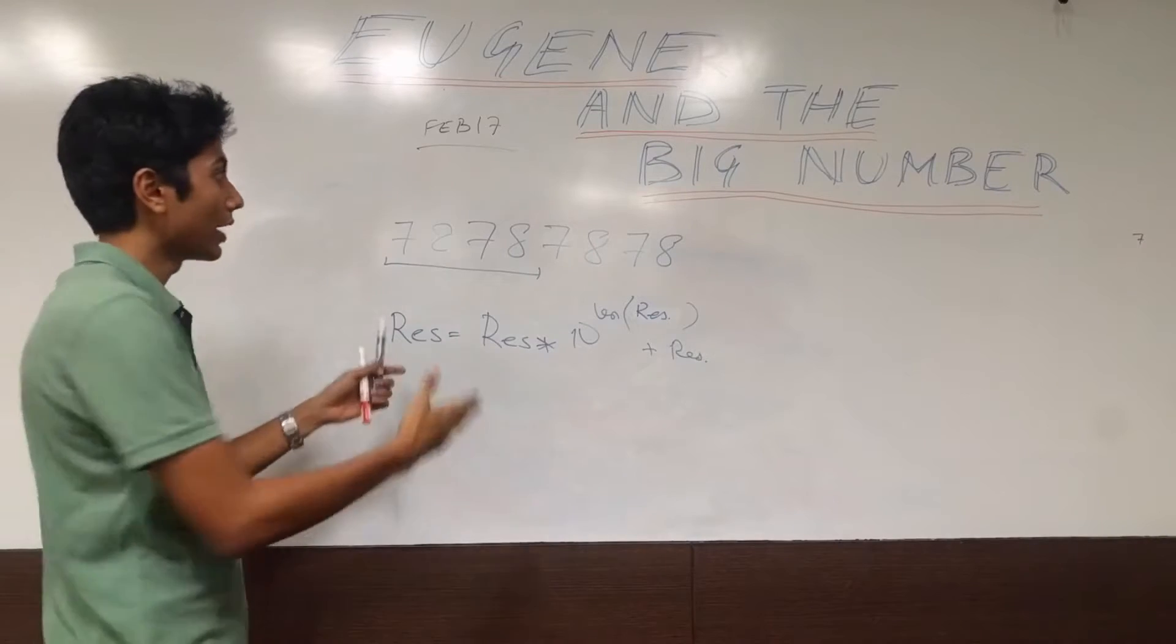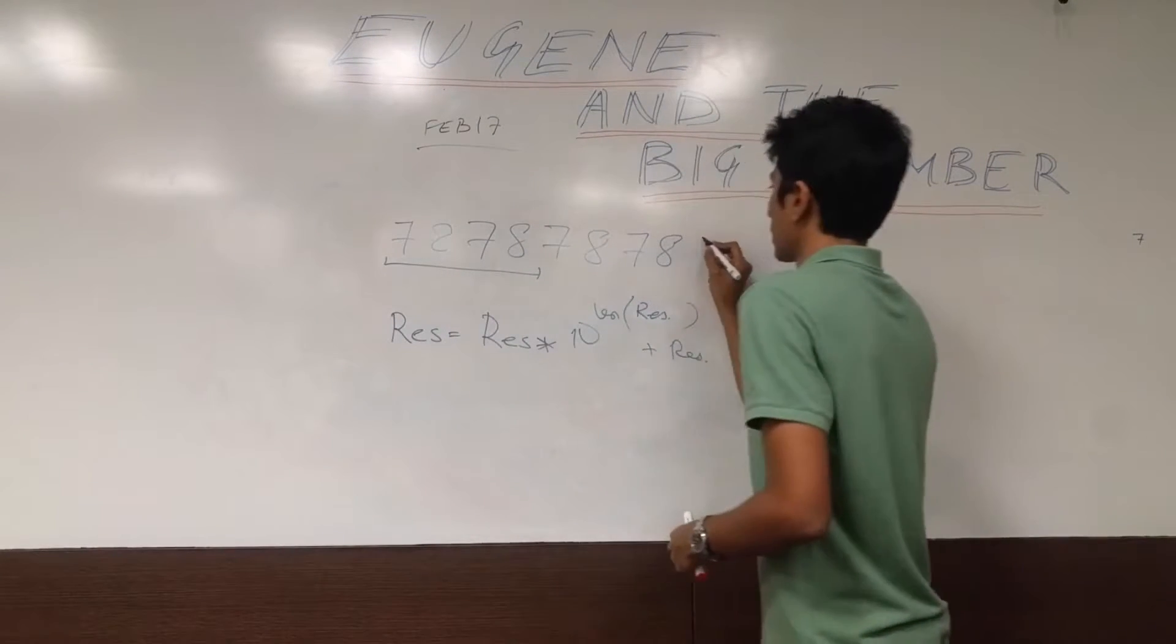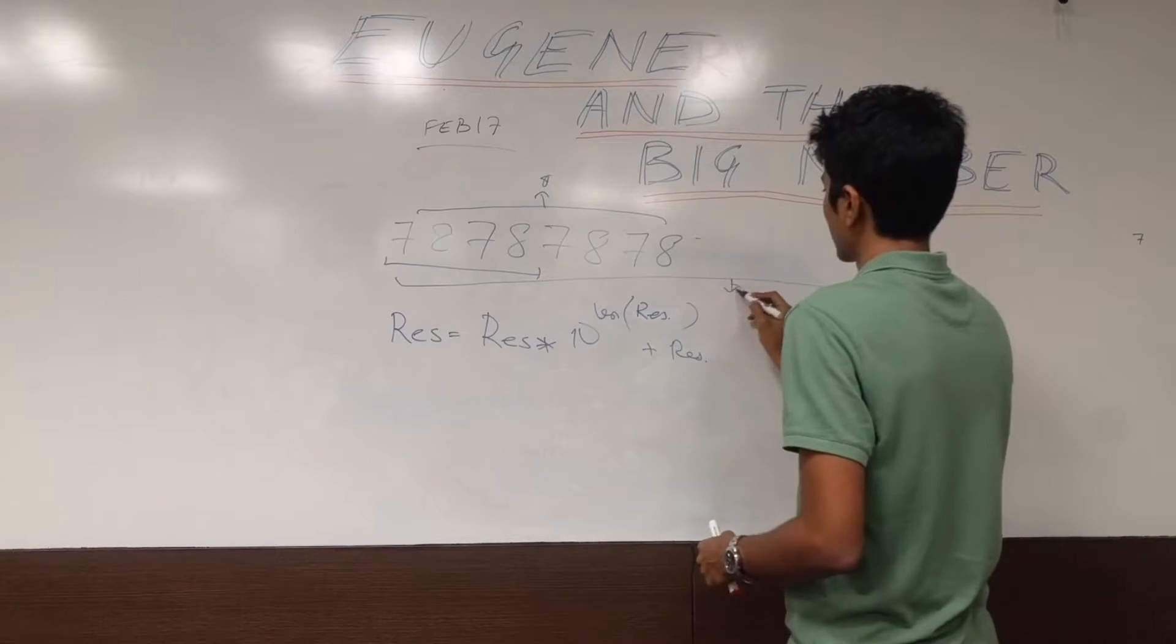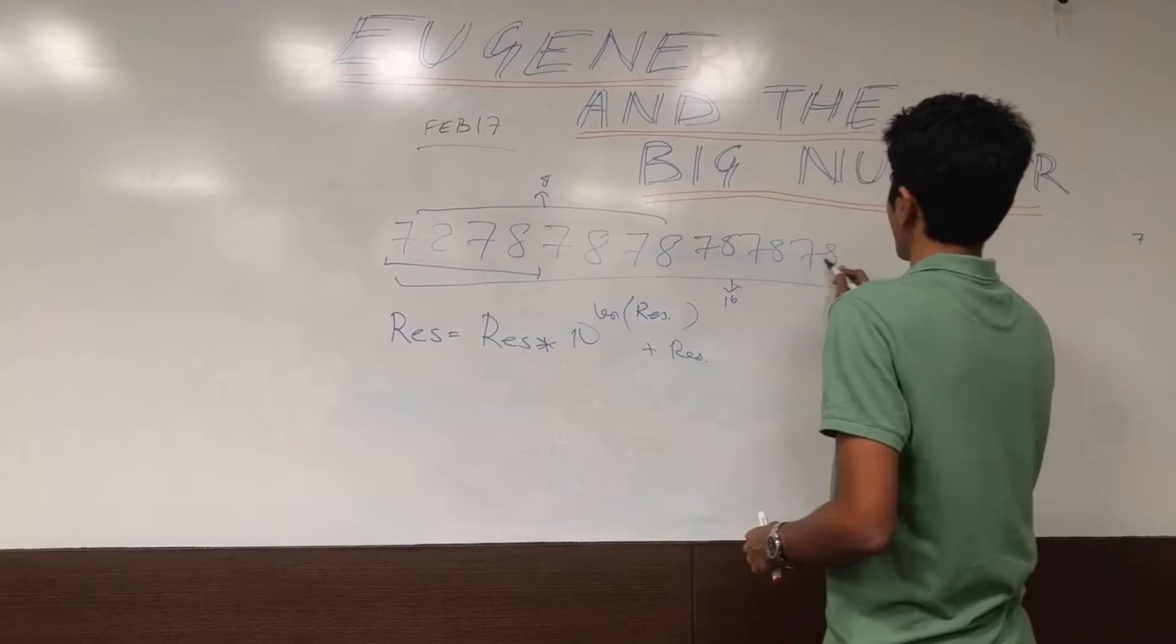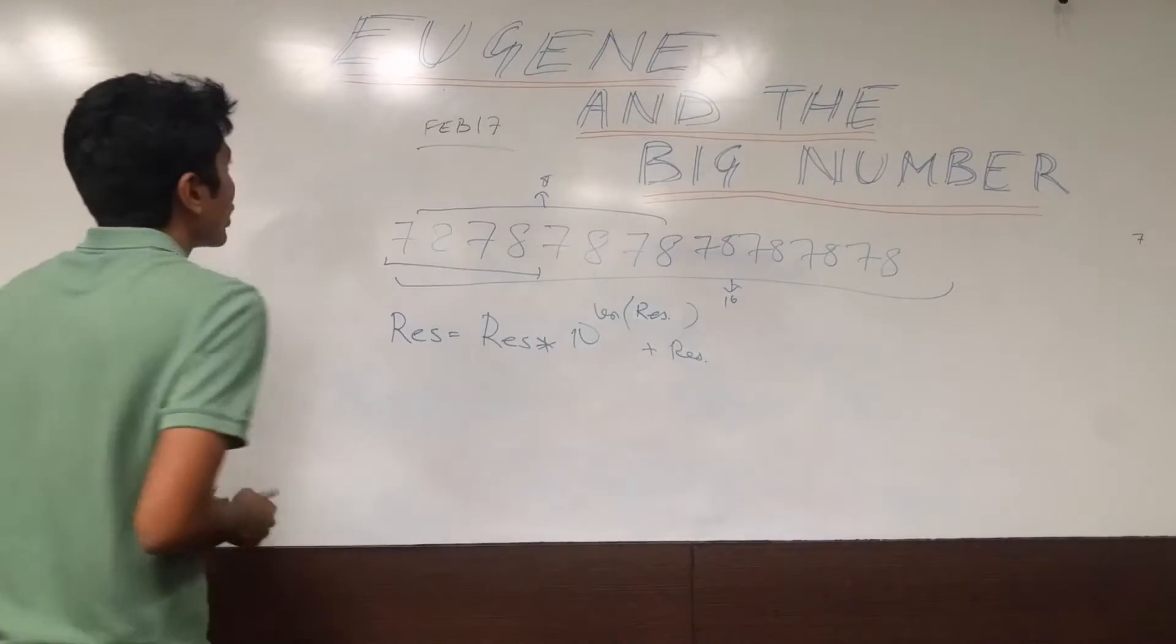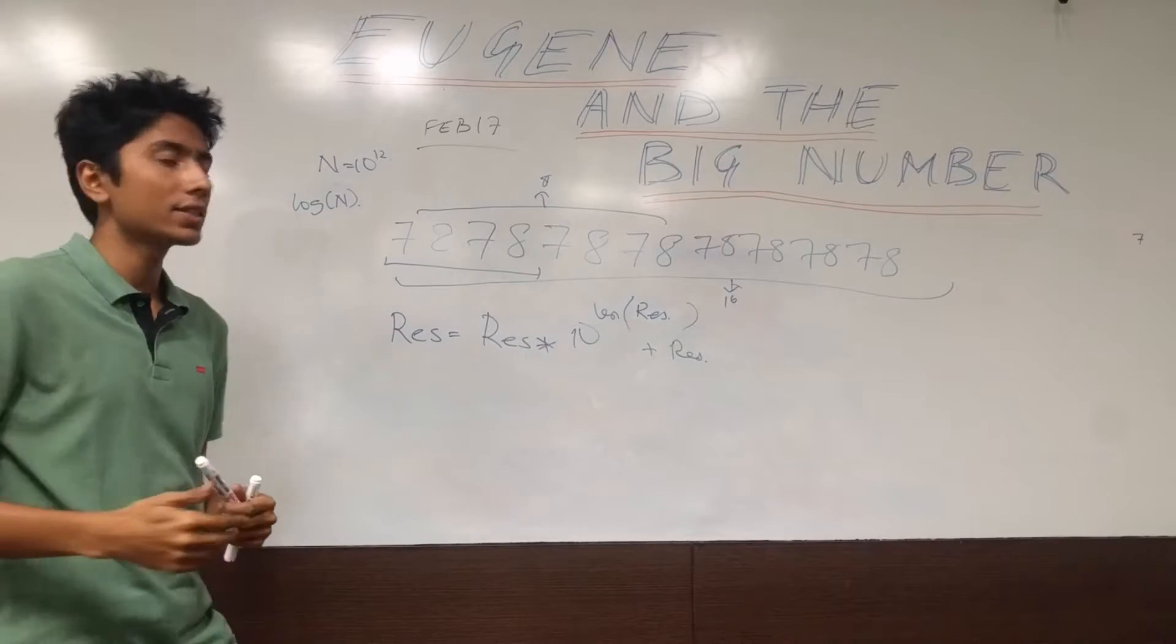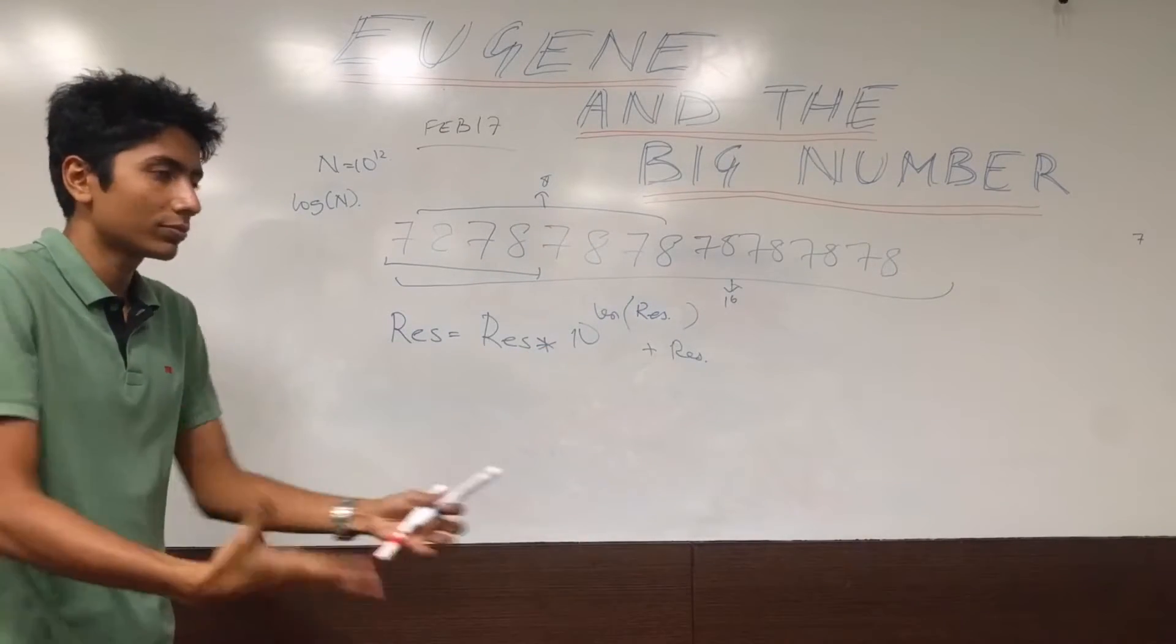The next value that we need to compute will be actually double this size. So this is of size 8. The next one will be of size 16. So I will just write it down because it looks pretty fun. So at this pace you are going to hit n which is 10 raised to power 12 in just log n time. Because you are exponentially increasing the size of the result that you are finding out.